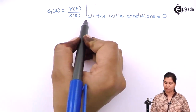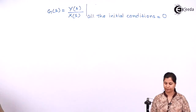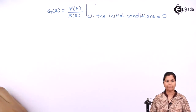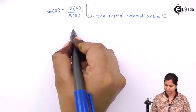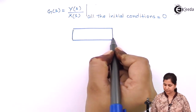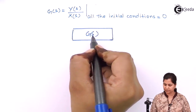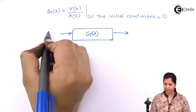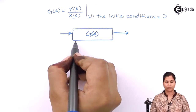This is the formula for the transfer function. If we represent it by a block diagram, then X(s) is the input.